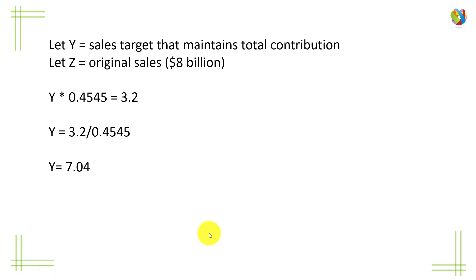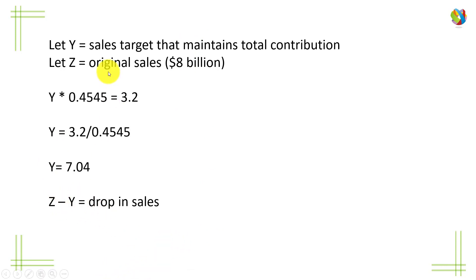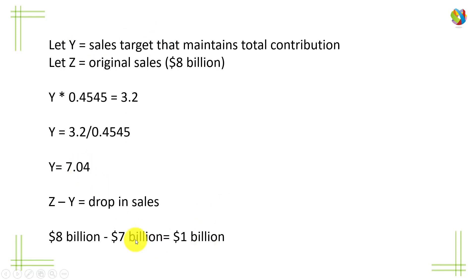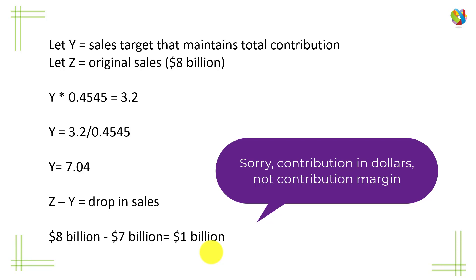This gives us a figure of 7.04. The original sales Z minus the new target Y gives the drop in sales. Rounding 7.04 down to 7 billion, 8 minus 7 is $1 billion. So if the company drops its sales by $1 billion, it will still have the same total contribution as before the price increase.